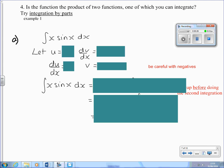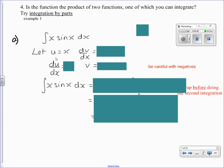But you have to think which of them becomes simpler when you differentiate it. X becomes simpler when you differentiate it. Sine x doesn't become any simpler, so u is x and dv by dx is sine x.